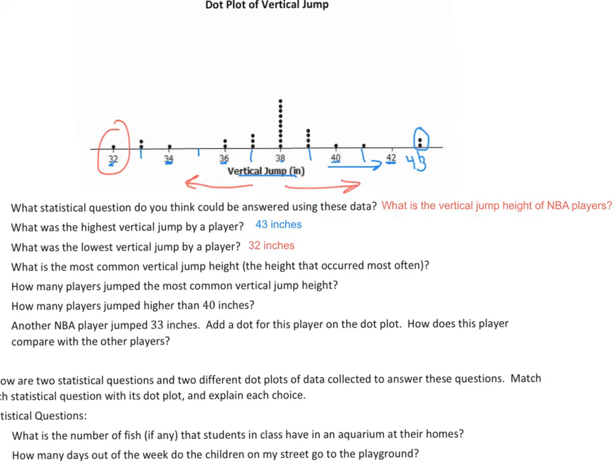So for D, what is the most common vertical jump height? The height that occurred most often. So when we look at this, we have to look at where all or the majority or the highest number of dots is located. And we can see that right here in the middle at 38. And it looks like there's one, two, three, four, five, six, seven, eight, nine, ten of them. It looks like there's ten of them right there at 38 inches.